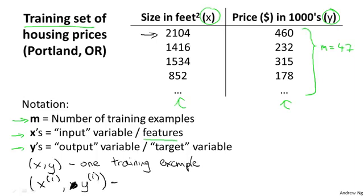And I'm going to use this to refer to the i-th training example. So this superscript i over here, this is not exponentiation, right? This (x^i, y^i), the superscript i in parentheses, that's just an index into my training set. And it refers to the i-th row in this table. So this is not x to the power of i, y to the power of i. Instead, (x^i, y^i) just refers to the i-th row of this table.